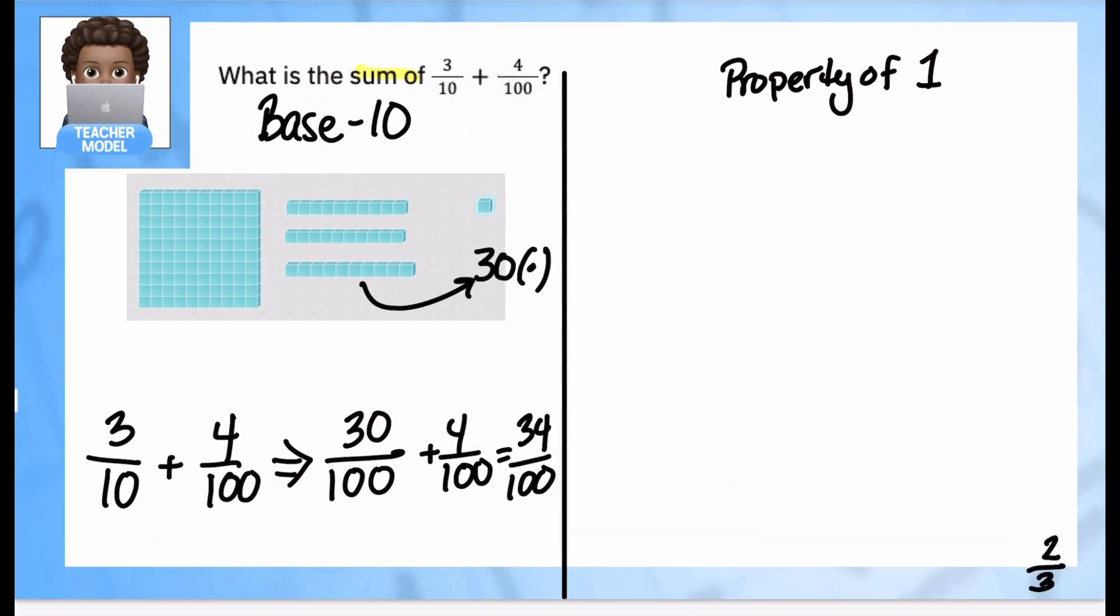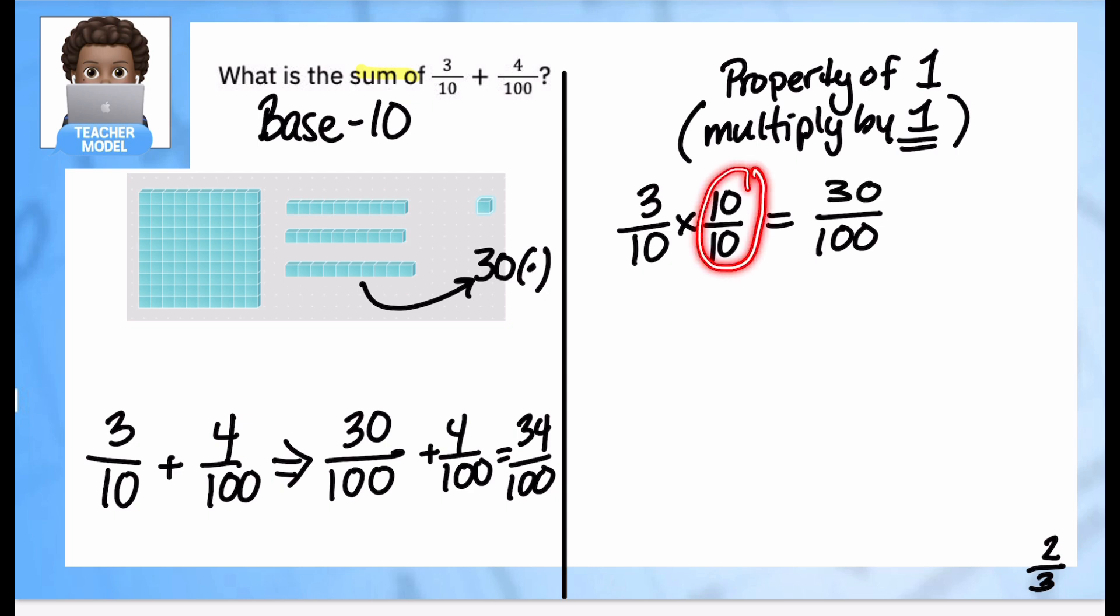by one to get an equivalent fraction. So watch what I mean. I want my three-tenths to have a denominator of 100, so I'm going to multiply it by a fraction that has the same numerator and denominator. I'm going to multiply it by 10 over 10. Why? Because 10 times 10 is 100, and 3 times 10 is going to give me 30. And why do these two numbers have to be the same? Because again, I'm multiplying by one, so that my value doesn't change.